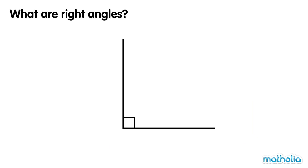To show that an angle is a right angle, we draw a square symbol.